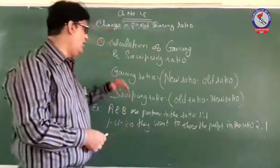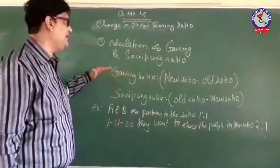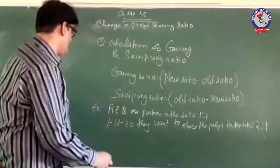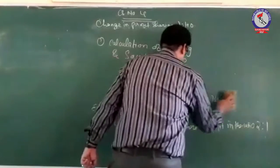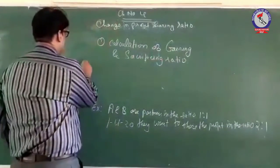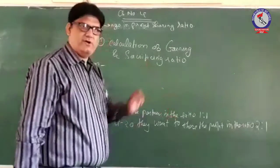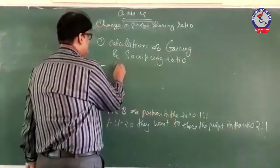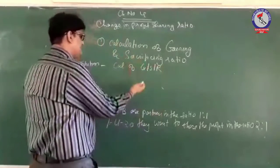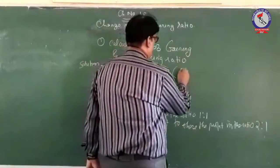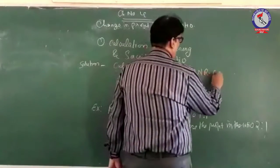So now we have to find out the gain or sacrifice made by the partners. We will do this by making use of one of these formulas — calculation of gaining and sacrificing ratio. The board has said that old ratio is 1 is to 1 and now they want 2 is to 1, so we will use the formula: Gaining/Sacrificing Ratio = New Ratio minus Old Ratio.